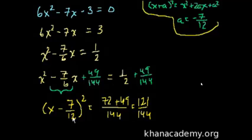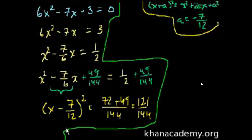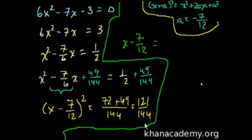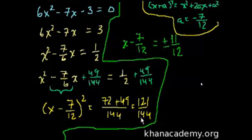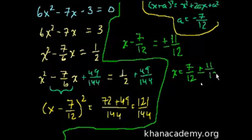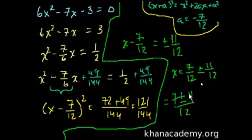Now we just take the square root of both sides. We get x minus 7/12 equals plus or minus 11/12, since the square root of 121 is 11 and the square root of 144 is 12. Then add 7/12 to both sides: x equals 7/12 plus or minus 11/12, which is 7 plus or minus 11 over 12. So x equals 18/12, which is 3/2, or x equals minus 4/12, which is minus 1/3.